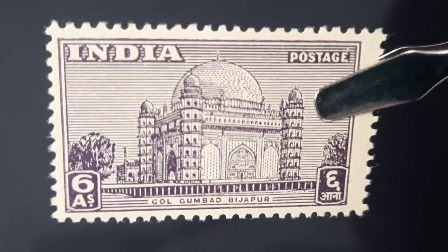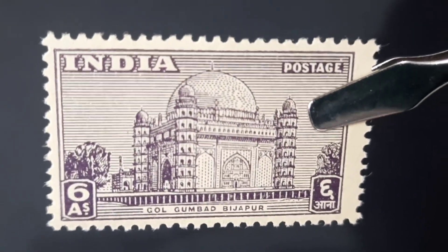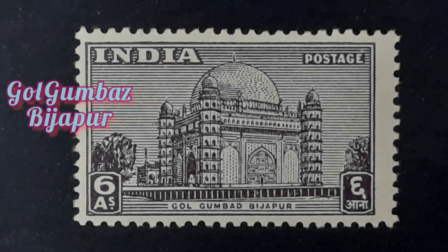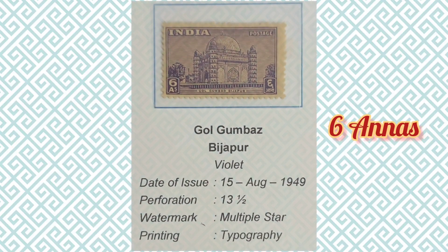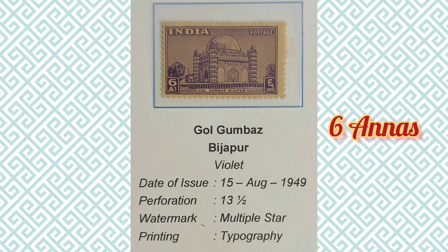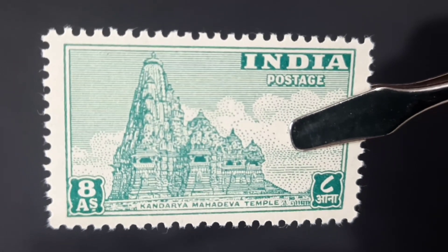The next stamp is the six annas stamp. The image depicted here is the Gol Gumbaz of Bijapur, a technically advanced domed structure built during the 17th century, standing as testimony to the Indo-Islamic architecture of the Deccan region. The philatelic information about this stamp is provided here.